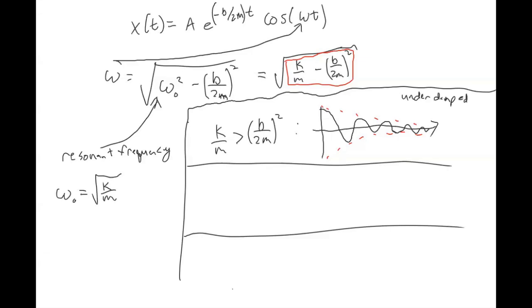If you have a mass-spring system and you stretched it to one meter, each time it oscillates back and forth it's no longer reaching one meter — maybe 0.9 meters, then 0.7, then 0.2, until it eventually stops moving. That's underdamped.